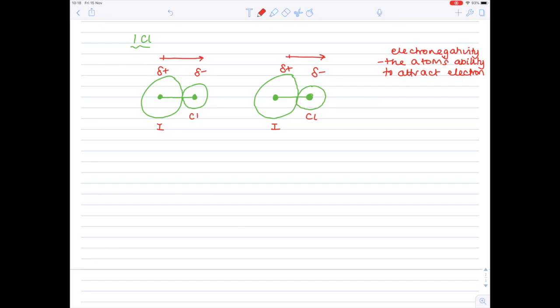And so, because we have the slightly negative chlorine on one molecule being brought close to the slightly positive iodine of another molecule, you end up with a permanent dipole, so an attraction between the two. We can call that a dipole-dipole force.